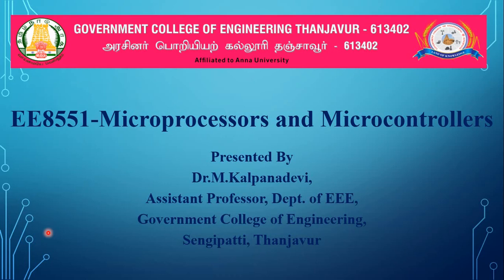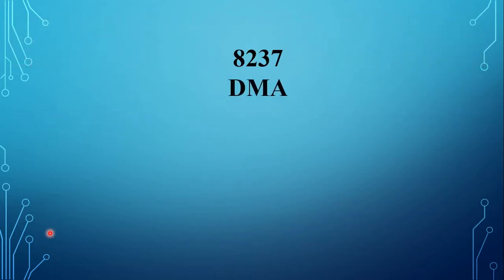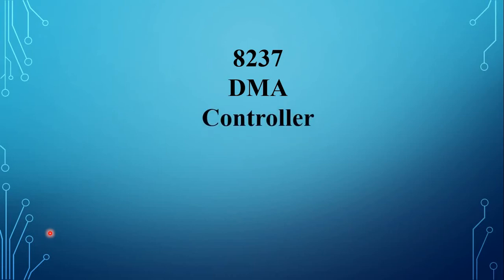In this video we are going to see the details of the 8237 DMA controller. DMA stands for direct memory access. Usually data is transferred between memory and external devices through the accumulator. When bulk data transfer is to be made, routing each data byte through the accumulator is a time-consuming operation.